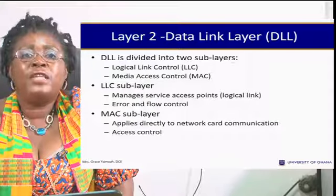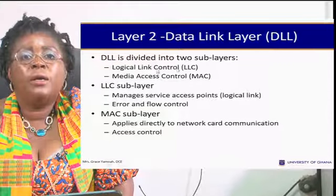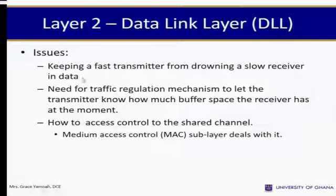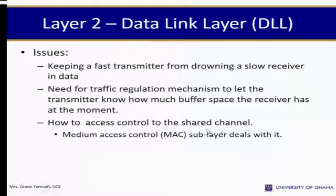The data link layer is divided into two sub-layers: the Logical Link Controller (LLC) and the Media Access Controller (MAC). The LLC sub-layer manages service access points, error control, and flow control. The MAC sub-layer interfaces directly with network card communication and handles access control. Data link layer issues include keeping a fast transmitter from overwhelming a slow receiver, traffic regression mechanisms, and how to control access to the shared channel — handled by the MAC sub-layer.